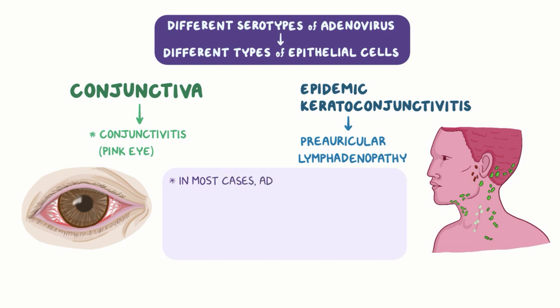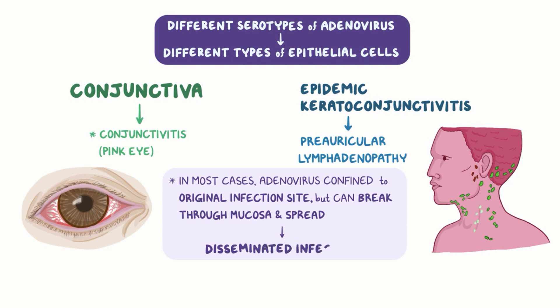In most cases, adenovirus is confined to the epithelial cells of its original infection site, but it can sometimes break through the mucosa and spread to other parts of the body, causing a disseminated infection.